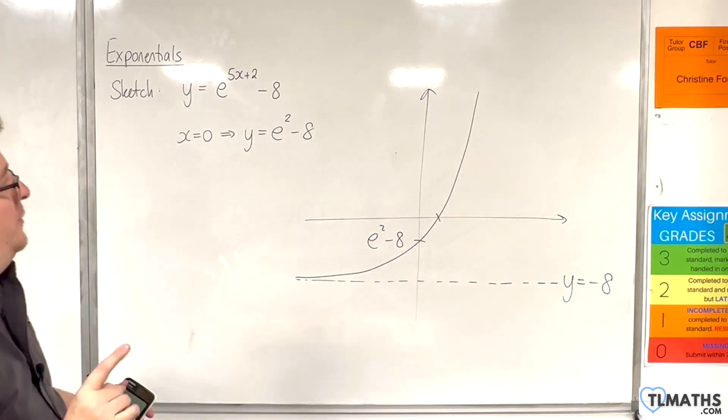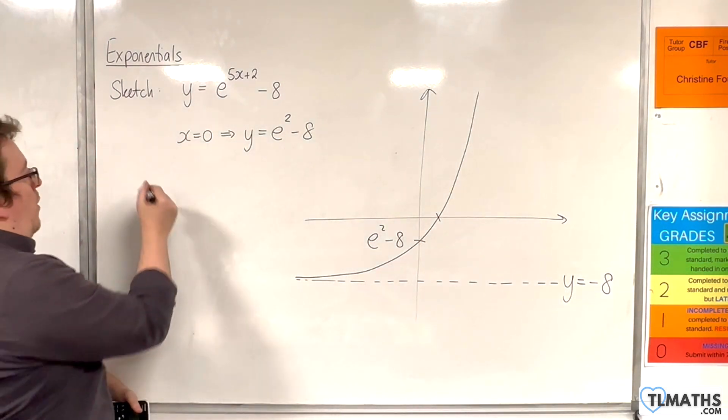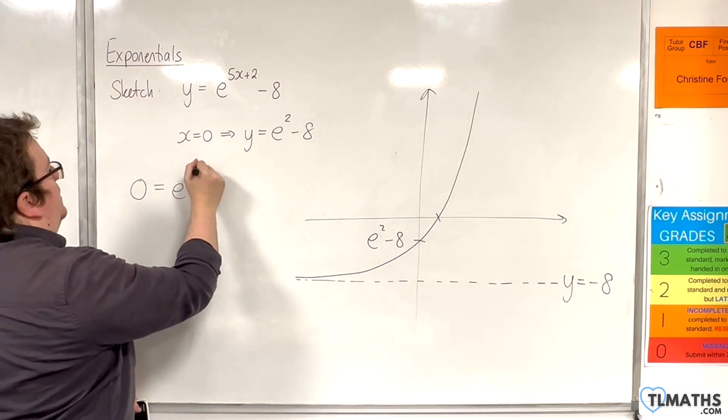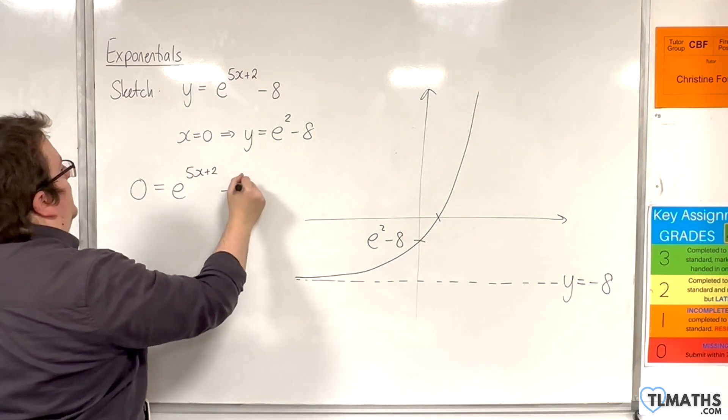Now, the other point of interest is where it crosses the x-axis, which is when y is 0. So 0 equals e to the 5x plus 2, take away 8.